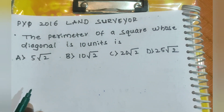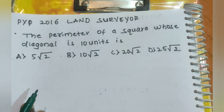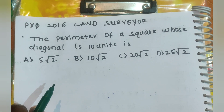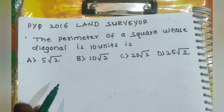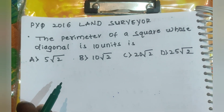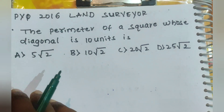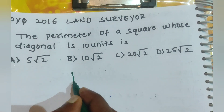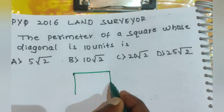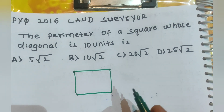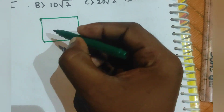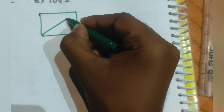Hi hello guys, this is a land surveyor previous year question 2016. The question is: find the perimeter of a square whose diagonal is 10 units. First you have to draw the square — this is a square.